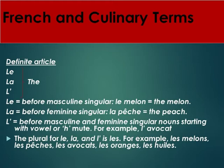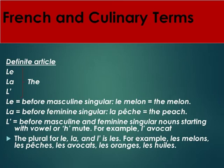The definite article: 'le' means 'the'. 'Le' is used before masculine singular nouns — for example, 'le melon' equals the melon. 'La' is used before feminine singular nouns — for example, 'la pêche' equals the peach. 'L'' is used before masculine and feminine singular nouns starting with a vowel or a mute 'h' — for example, 'l'avocat'. The plural for 'le', 'la', and 'l'' is 'les' — for example, 'les melons', 'les pêches', 'les avocats', 'les oranges', 'les huiles'.